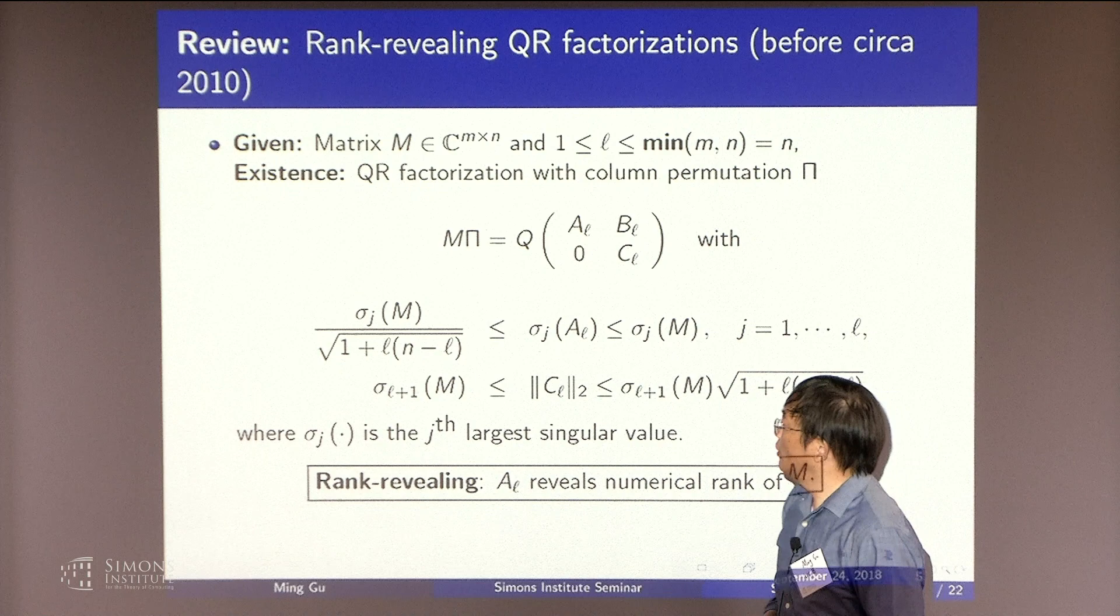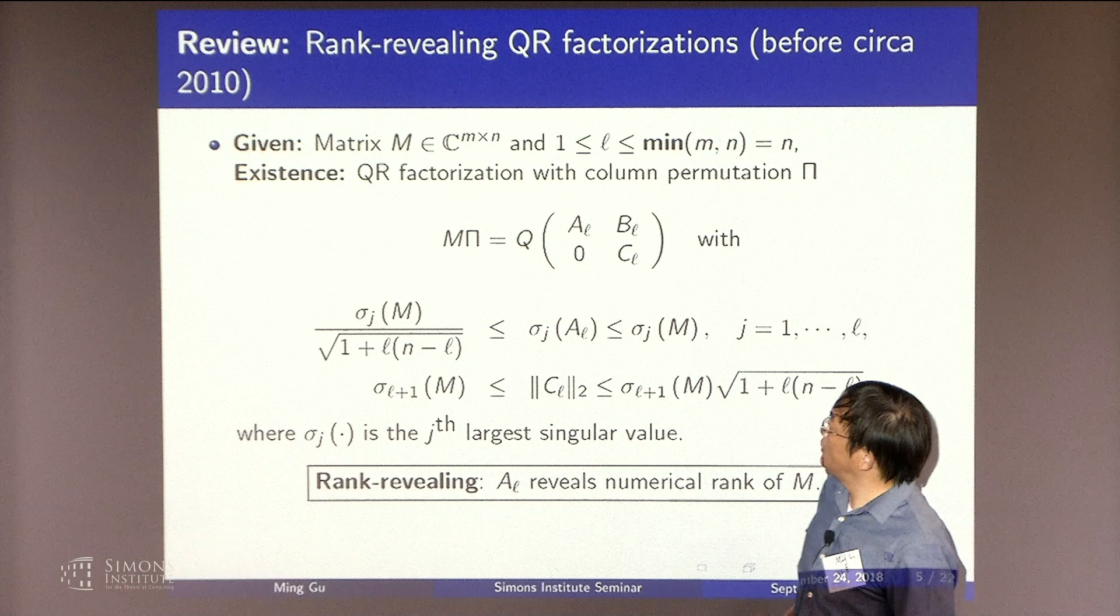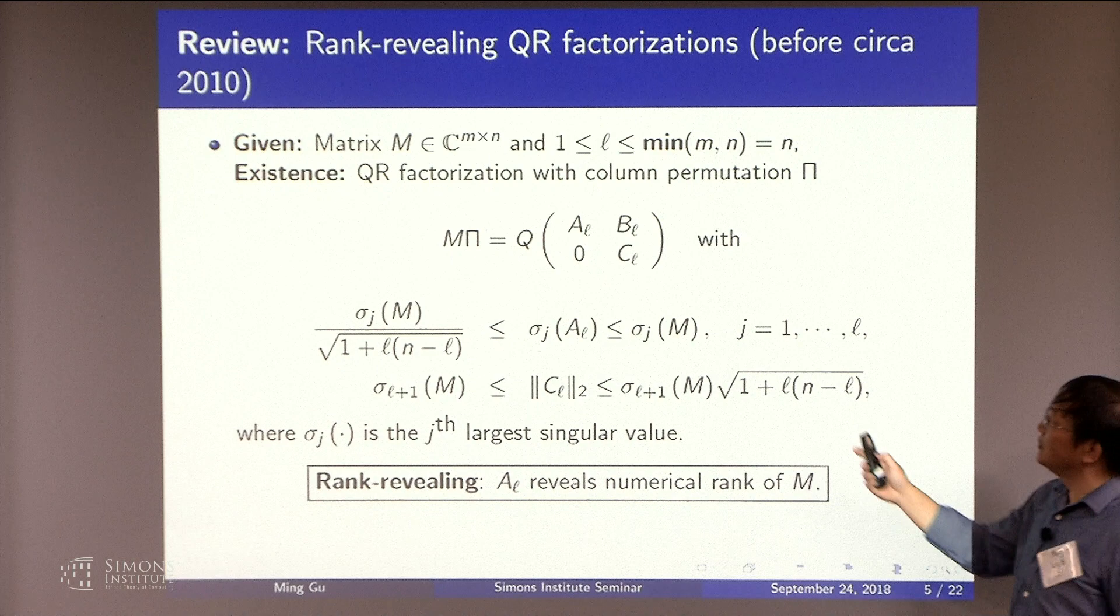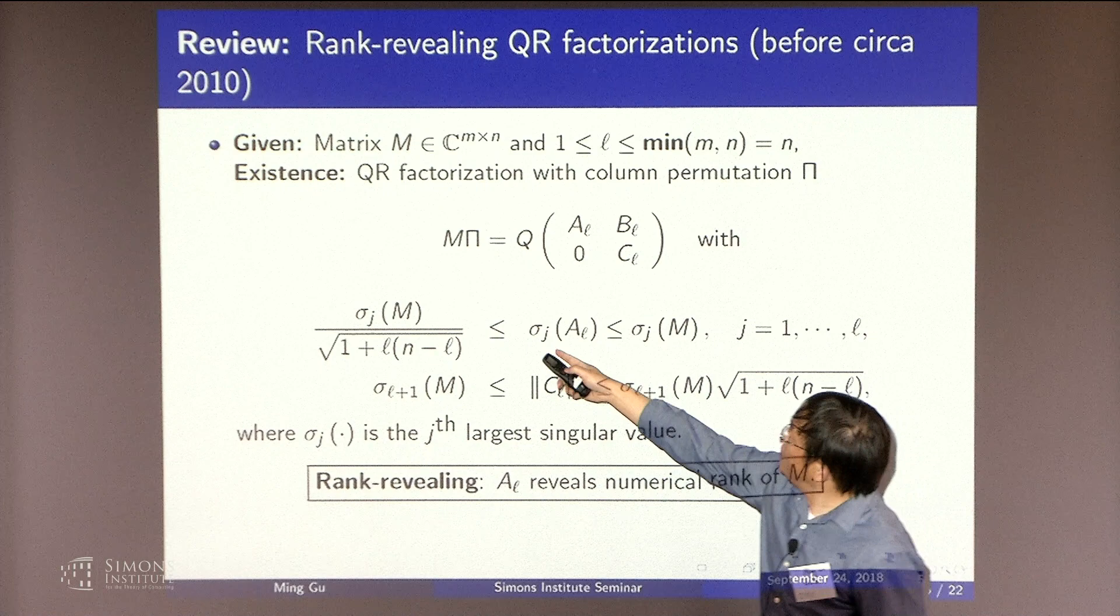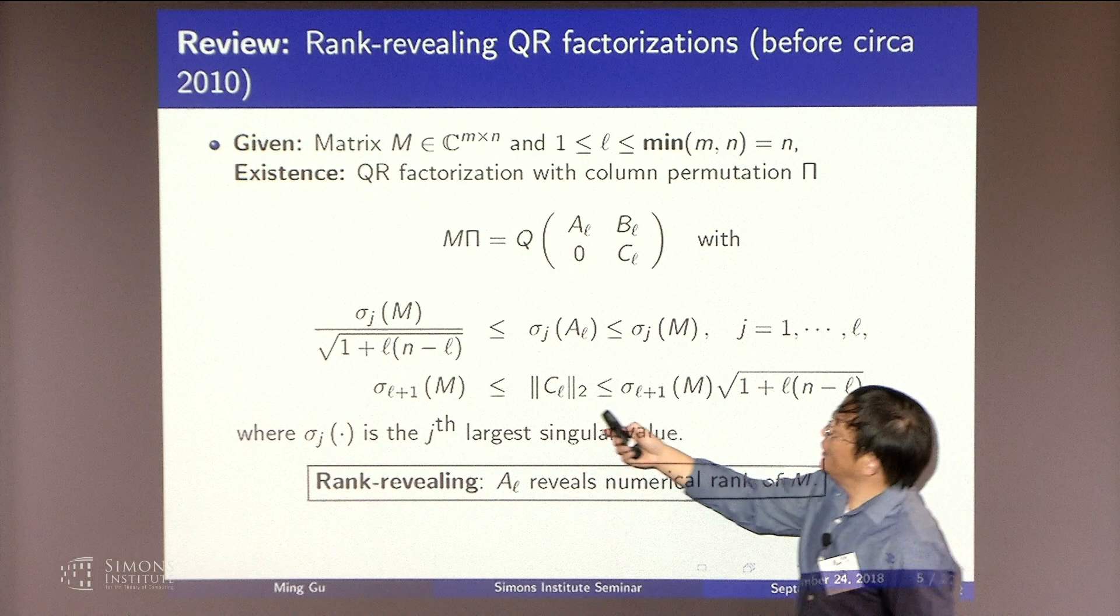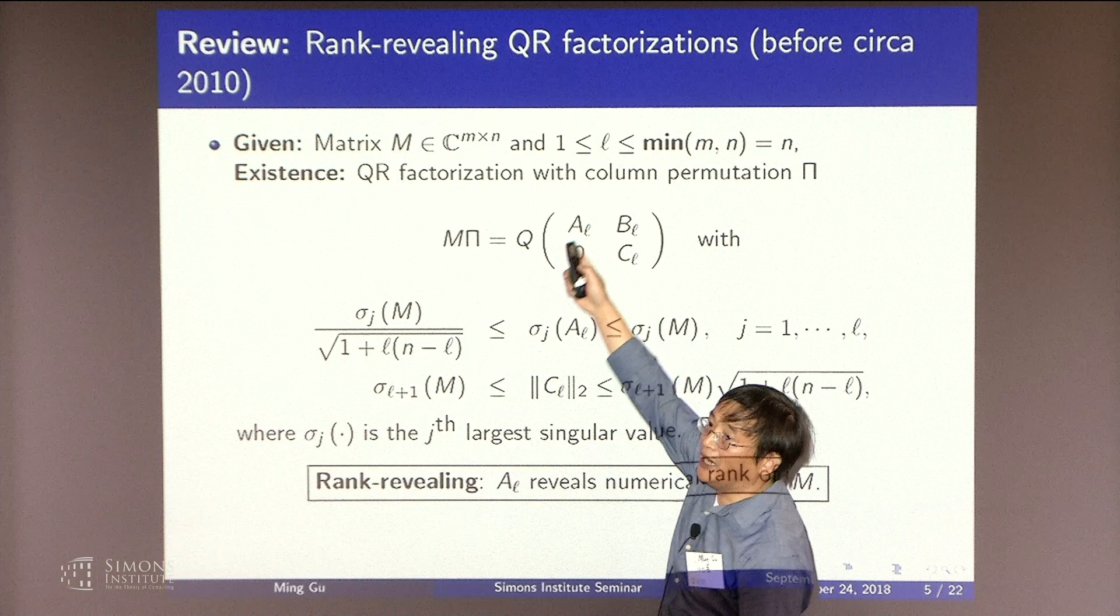And the focus is in finding the rank. So in this setup, what you can show is that you can find a permutation pi so that the leading piece, the AL matrix, will have all its singular values, 1 to L. The sigma j would be the jth largest singular value. So all these singular values would match the original singular values up to a constant factor. So if the jth singular value is tiny in the original matrix, this one would also be tiny. That would indicate rank deficiency. So that was the idea.